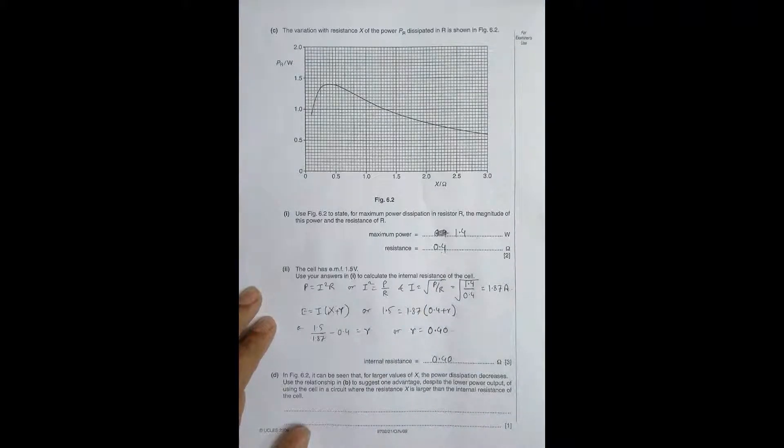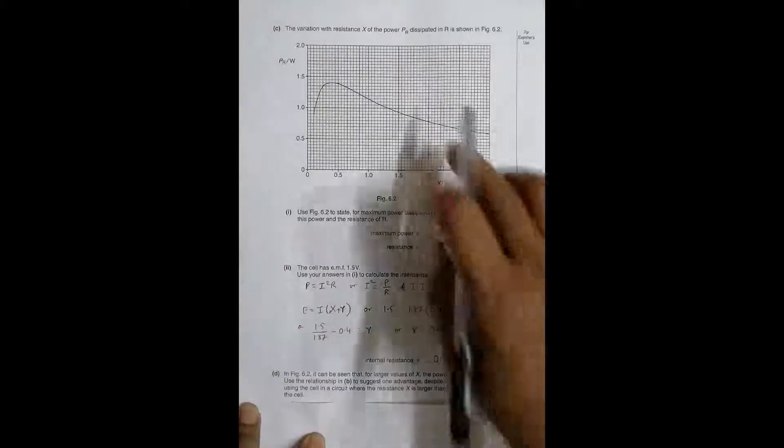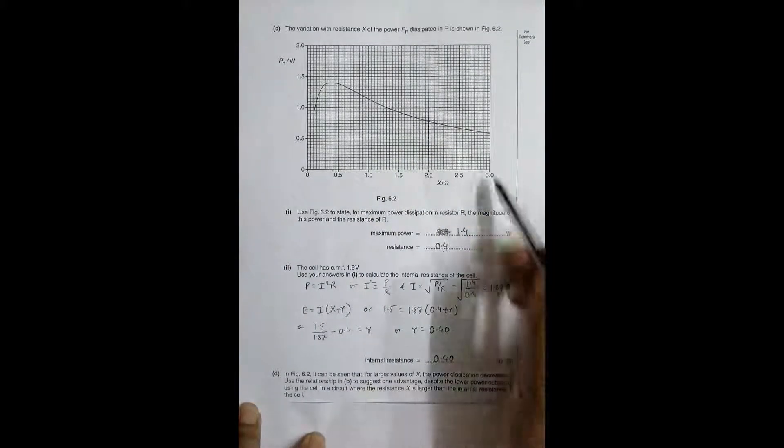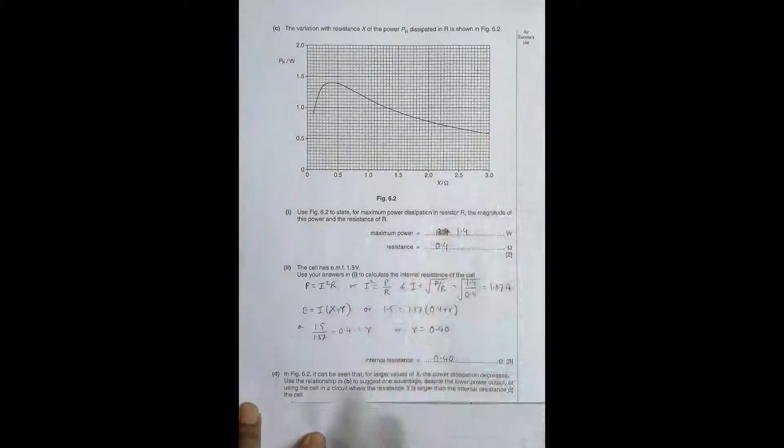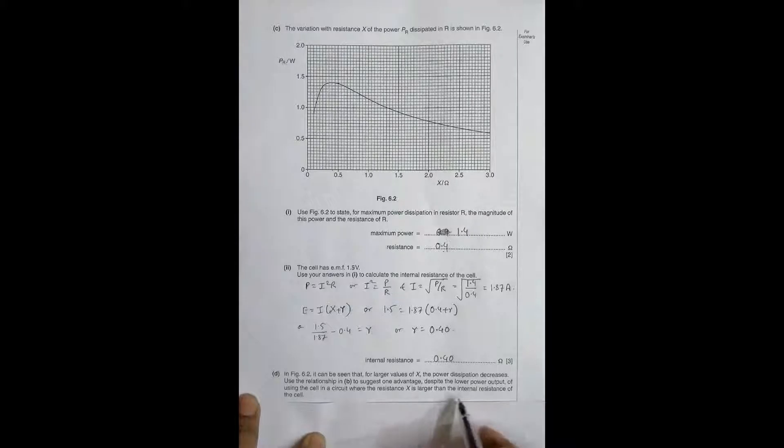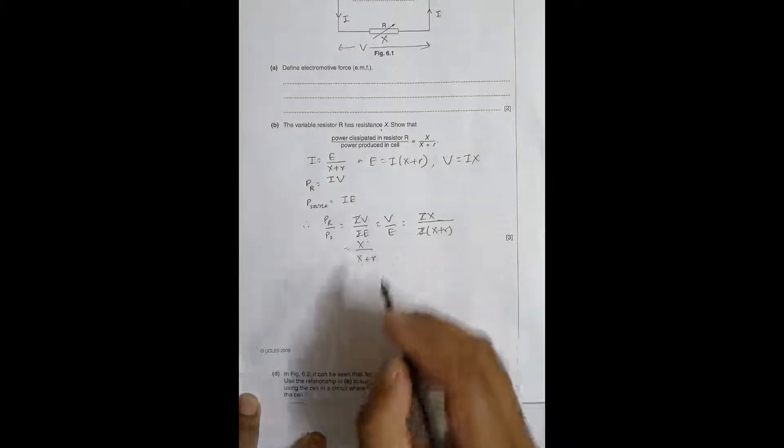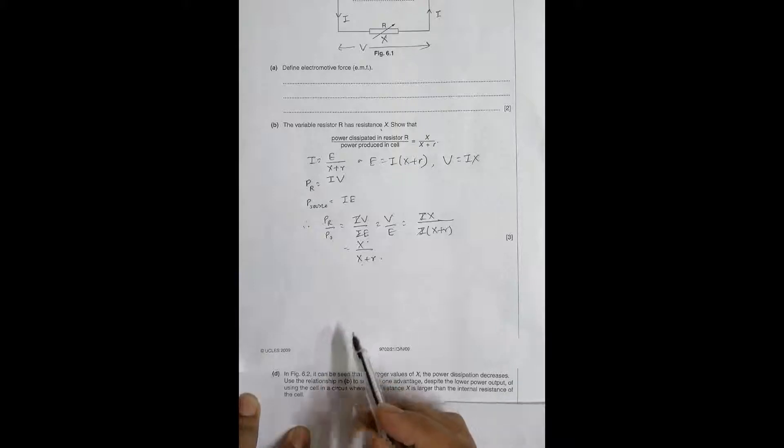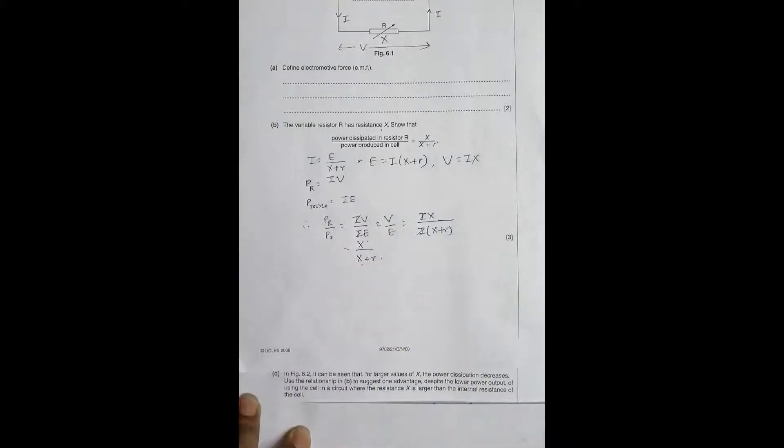In figure 6.2 it can be seen that for larger value of X the power dissipation decreases. Using the relationship in B, suggest one advantage despite the lower power output of using the cell in a circuit where the resistance X is higher. If X is more, this ratio will be more which means the system becomes more efficient. The power got by the resistor will be high compared to that of the source, so efficiency goes on increasing.